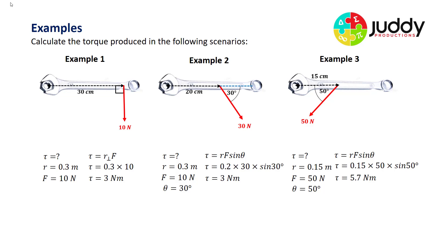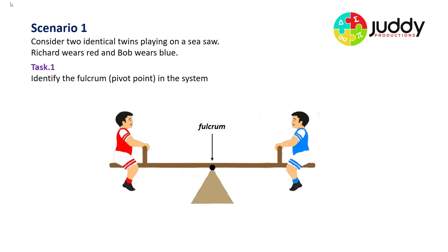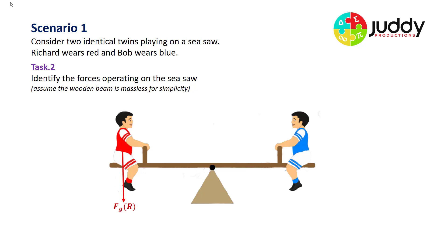These examples show how to apply the equations to calculate torque. Now consider two identical twins playing on a seesaw — Richard wears red and Bob wears blue. They have a nice balance at the moment. First, identify the fulcrum or pivot point: it's right in the center of the seesaw where it has its base of support. Next, identify the forces. We'll assume the wood beam is massless to simplify things. The red twin, Richard, has a gravitational force pulling him down towards the earth, acting on the seesaw.